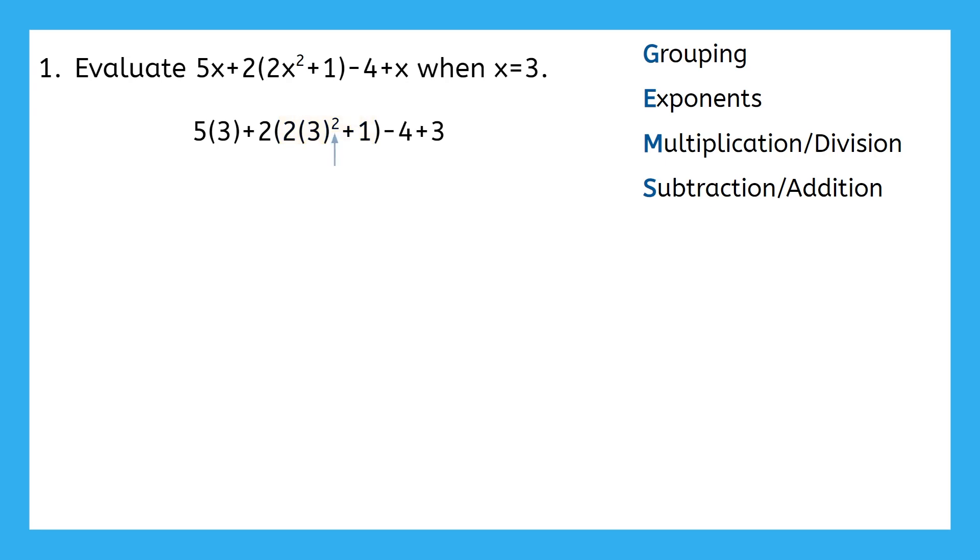Starting with the exponent, we need to calculate 3 squared, which is 9. And multiplying that by 2 gives us 18. Then we can add the 1, giving us 19. Let's bring everything else down.